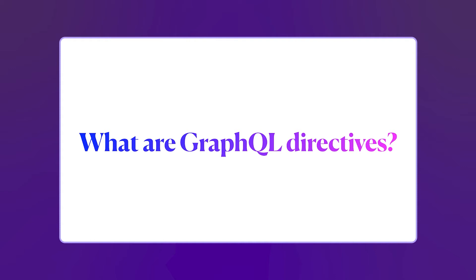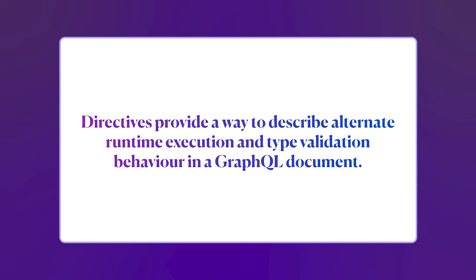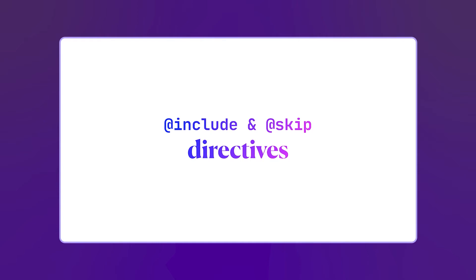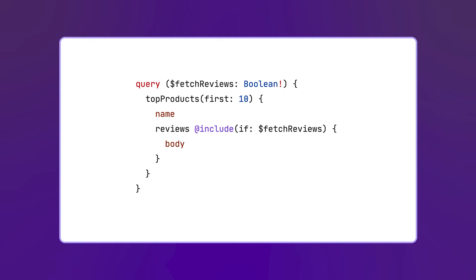So as we have seen, Apollo Federation relies a lot on directives. The GraphQL spec defines directives as a way to discover alternate runtime execution and type validation behavior in a GraphQL document. My personal definition is: directives allow you to change what a GraphQL server returns. The GraphQL spec does include some directives that reflect that definition — specifically the include and skip directives — which basically allow changing what the GraphQL API returns based on a variable.